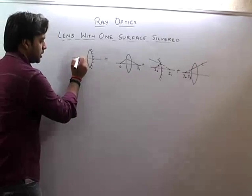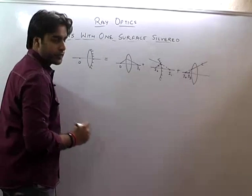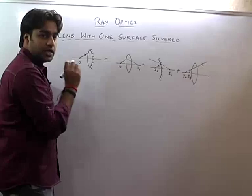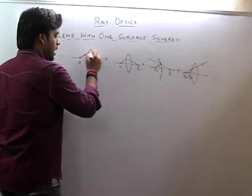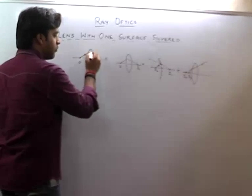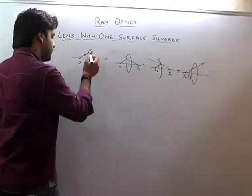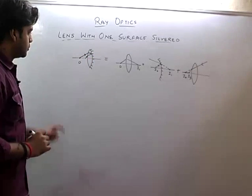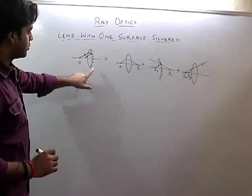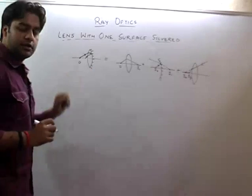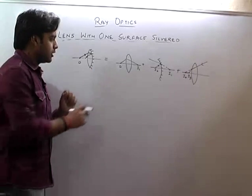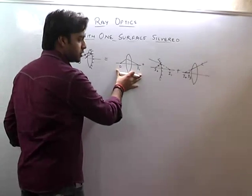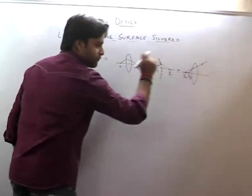Let's suppose I keep an object here. The ray will refract from the lens, then fall on the mirror, reflect from the mirror, and then refract again. So I can break it into three parts: first refraction, then reflection, then again refraction.